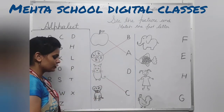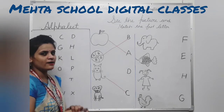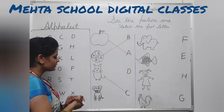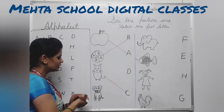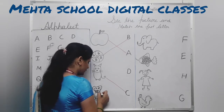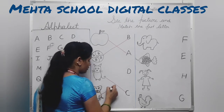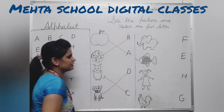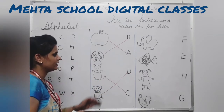What is this? D for dog. What is this? D for dog. D for dog. Next.